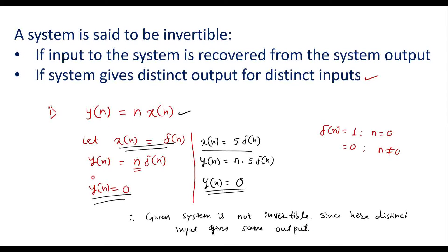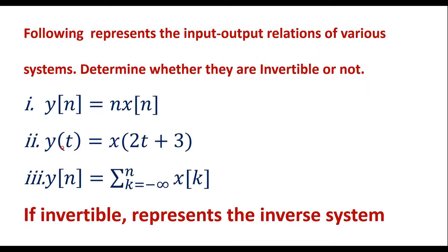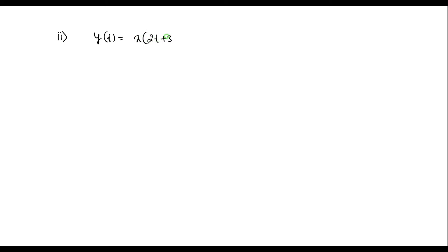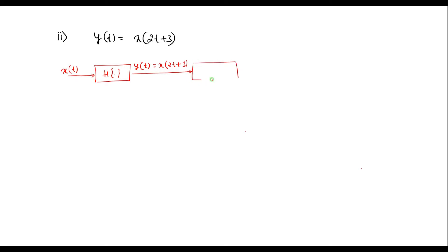Now let me verify the second system: y of t is equal to x of 2t plus 3. Consider a system with system operator h. Suppose the input to the system is x of t; then it produces output y of t, which is equal to x of 2t plus 3. Suppose if I pass this signal through another system — I will call this the inverse system — whose output is z of t, and this must equal x of t. Then we can say that the system is invertible.